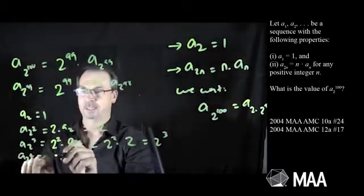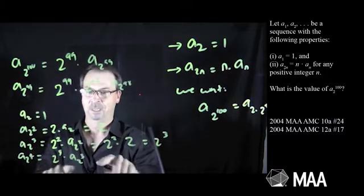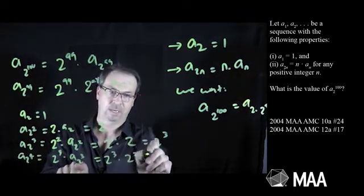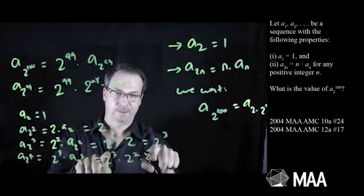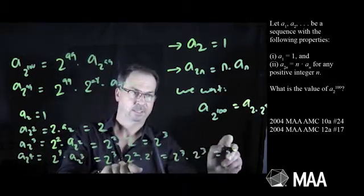a₂ to the 4th is 2 times 2 cubed, so it would be 2 cubed times a₂ cubed. We just worked that out, so it's 2 cubed times 2 squared times 2, which is 2 cubed times 2 cubed, which is 2 to the 6th.